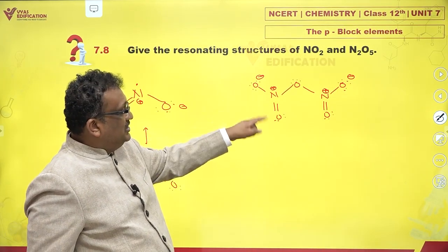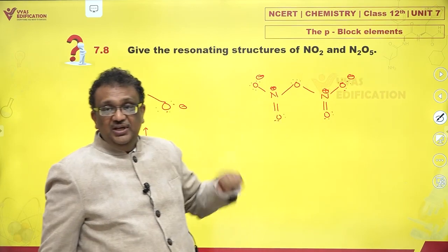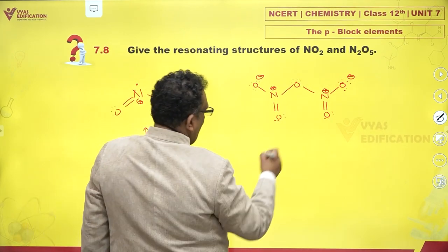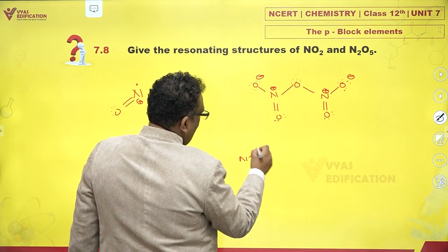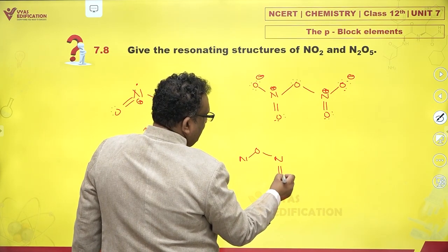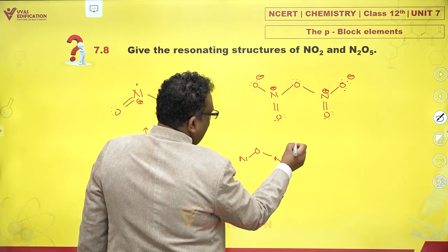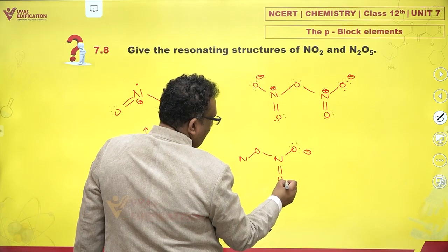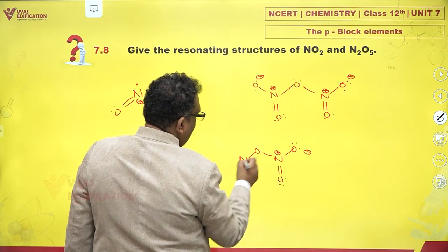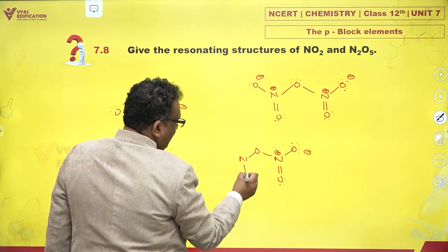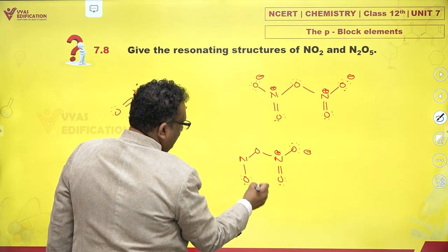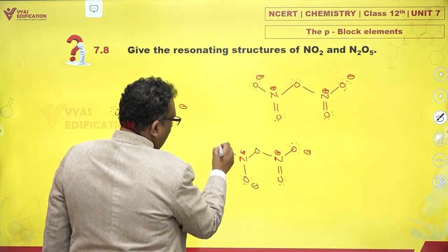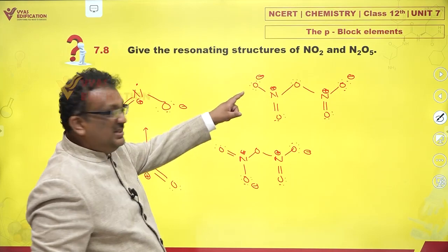Double single resonance is here. Double single resonance is here. So second possibility, NON. This double and this single, this stays as it is. No change. In this case, we make a change.